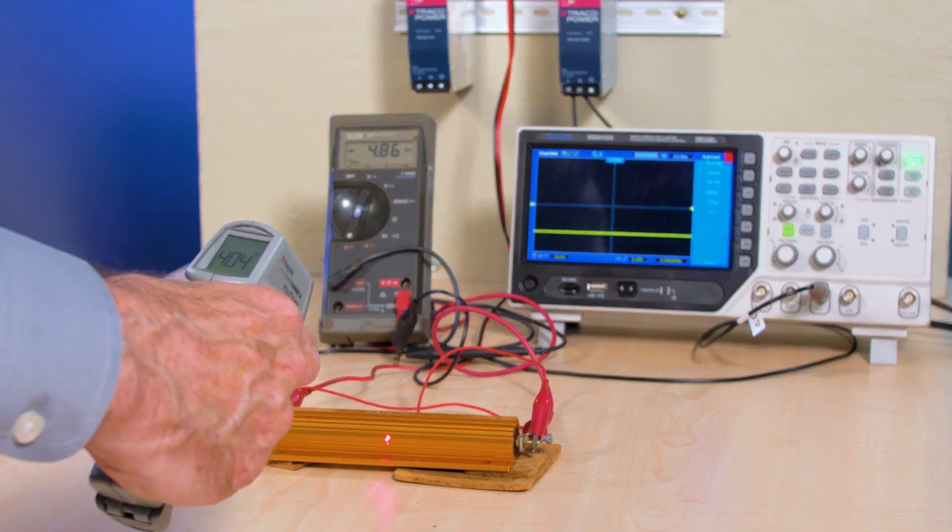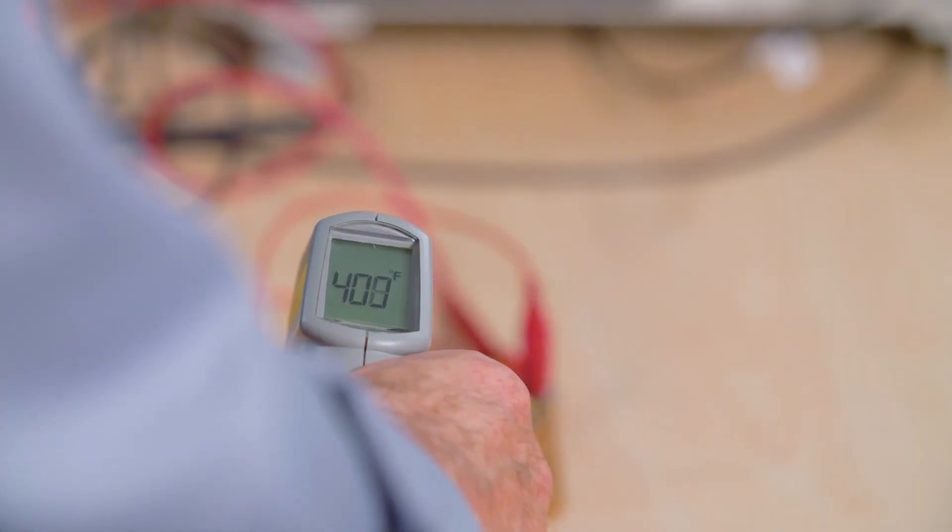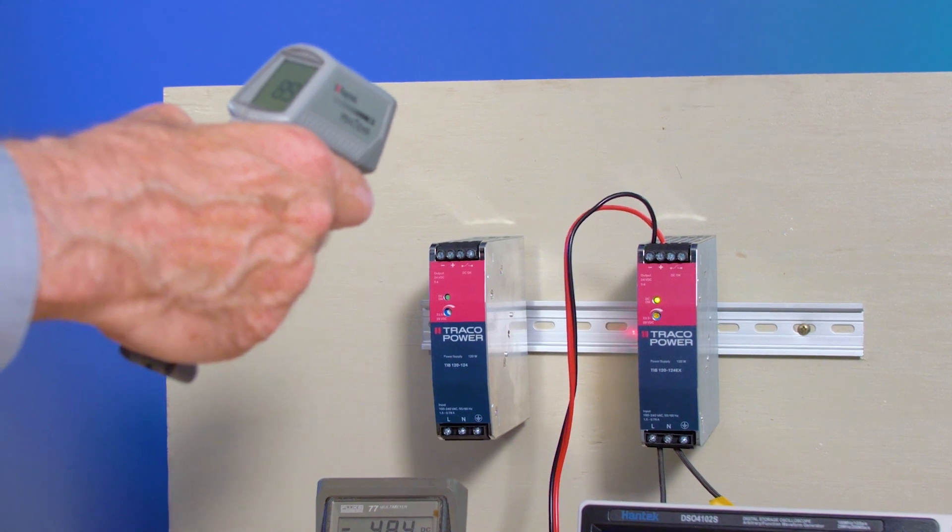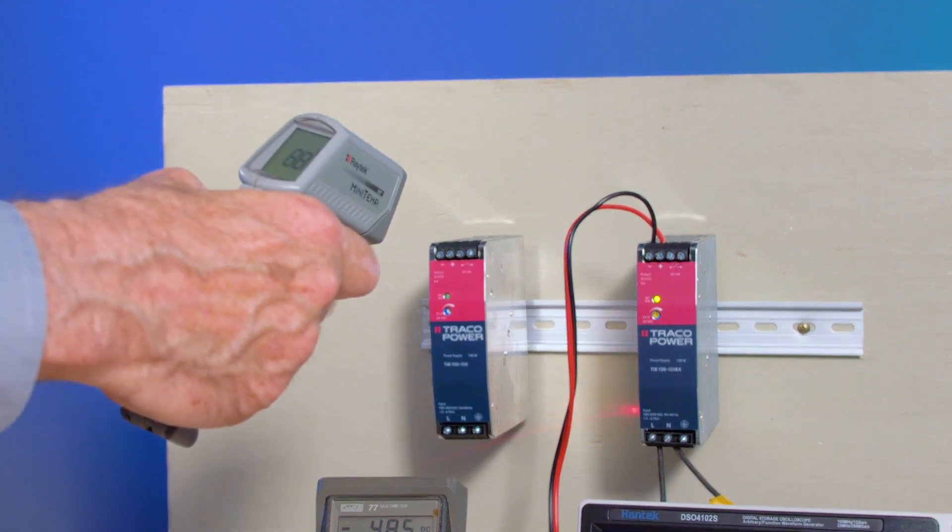Thanks to our spot thermometer we see the dummy load is heating up and giving us a kind of toaster oven effect here in the studio. But when we aim the spot thermometer at the TIB supply we get a reading not much higher than room temperature.